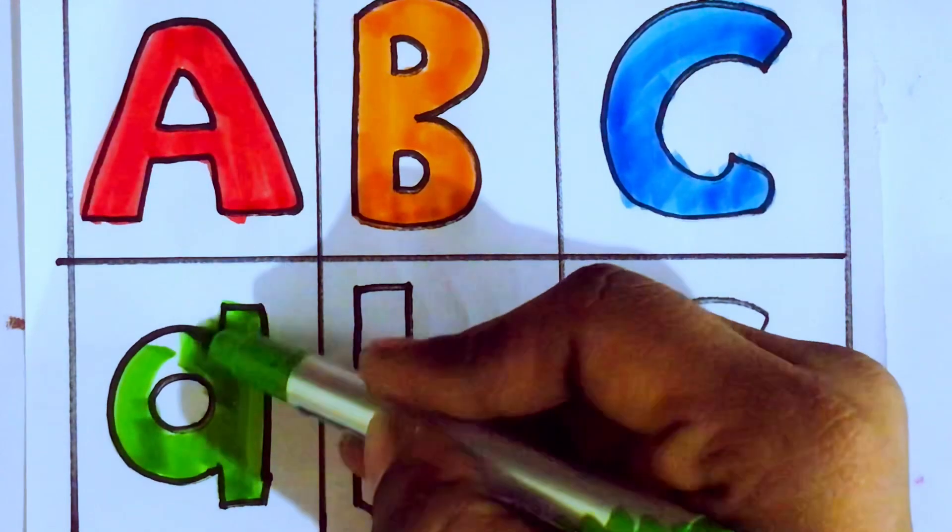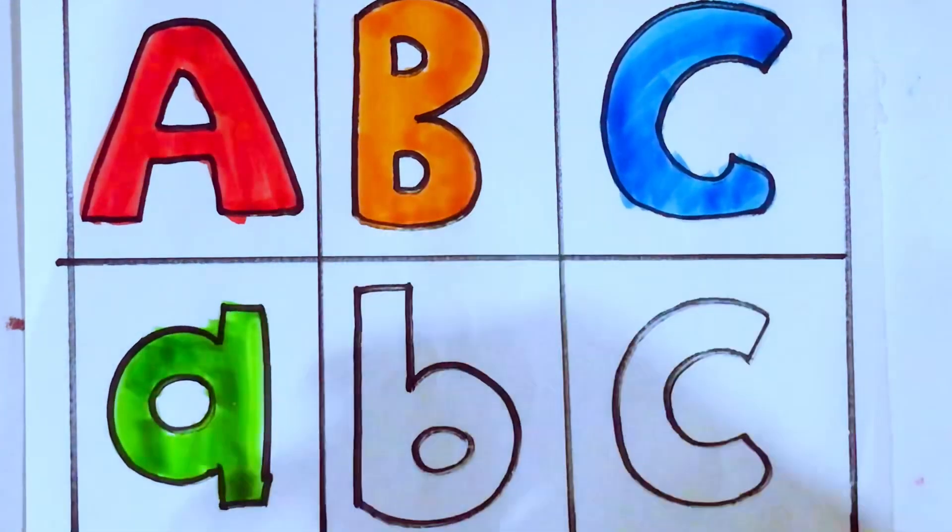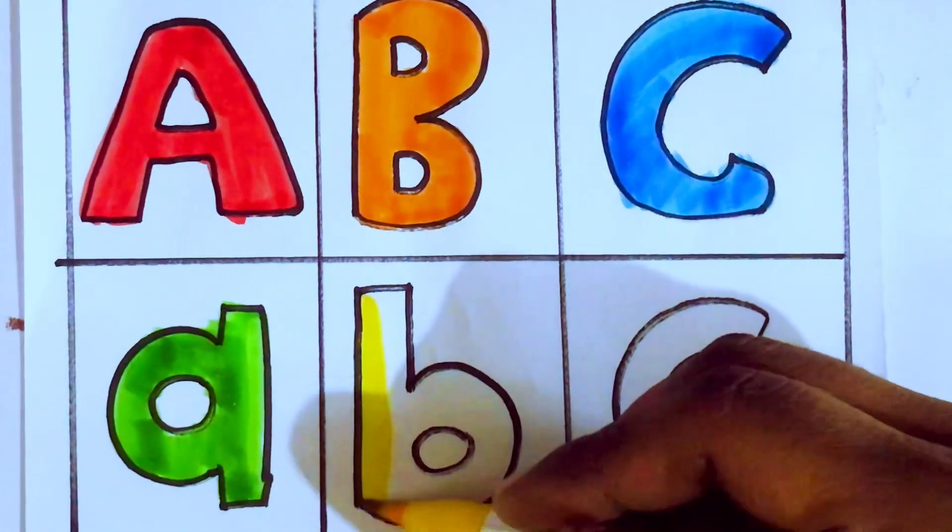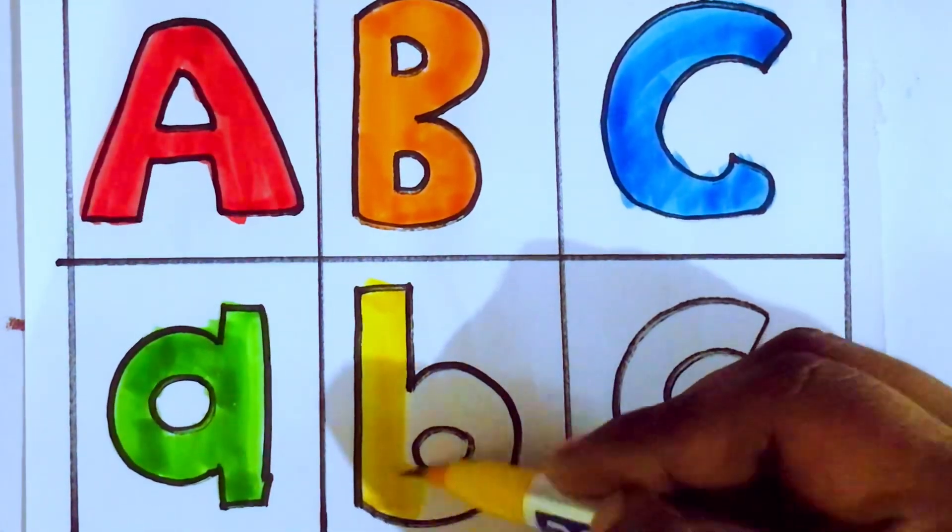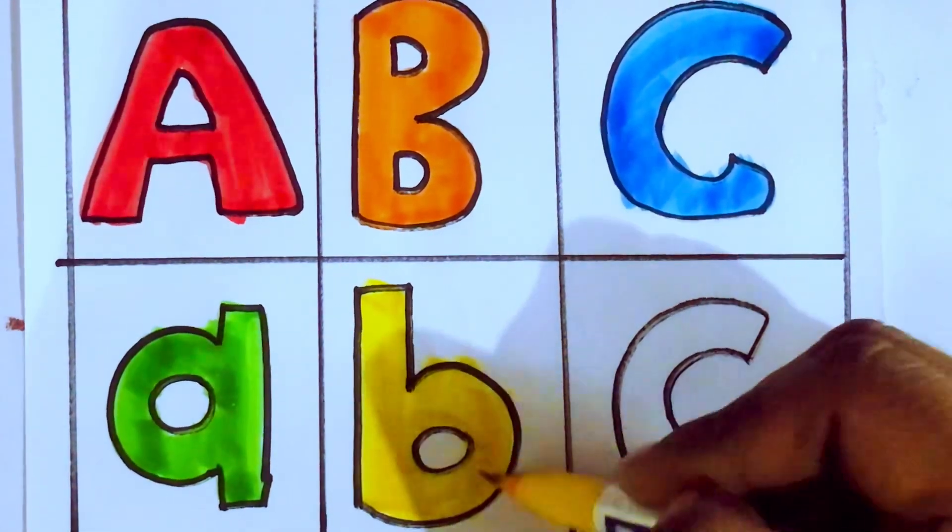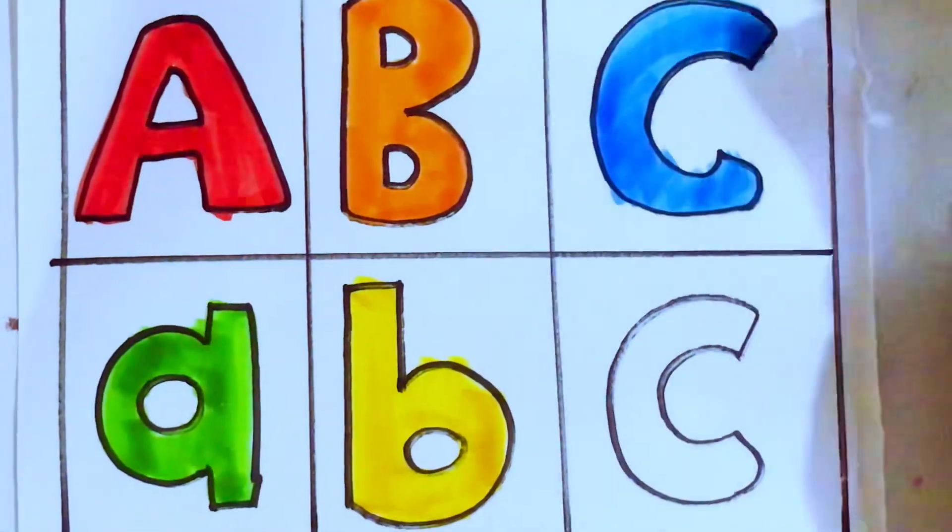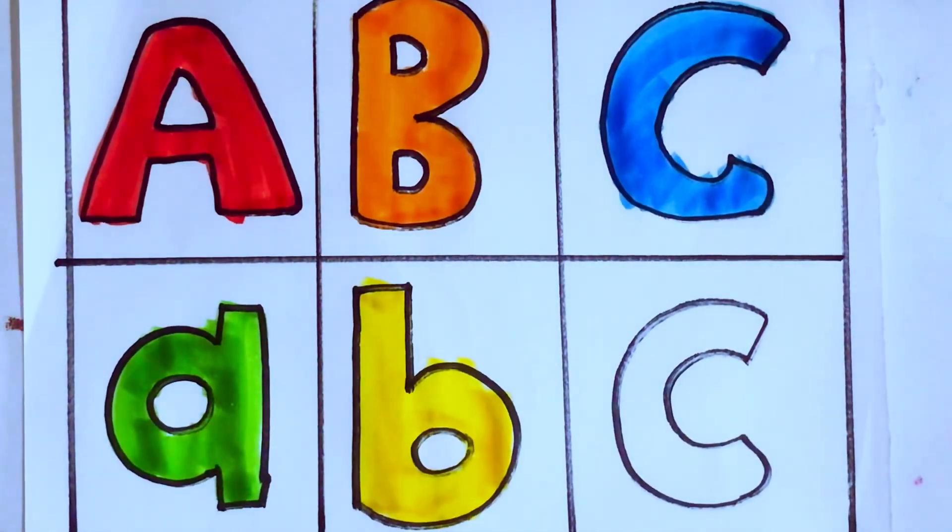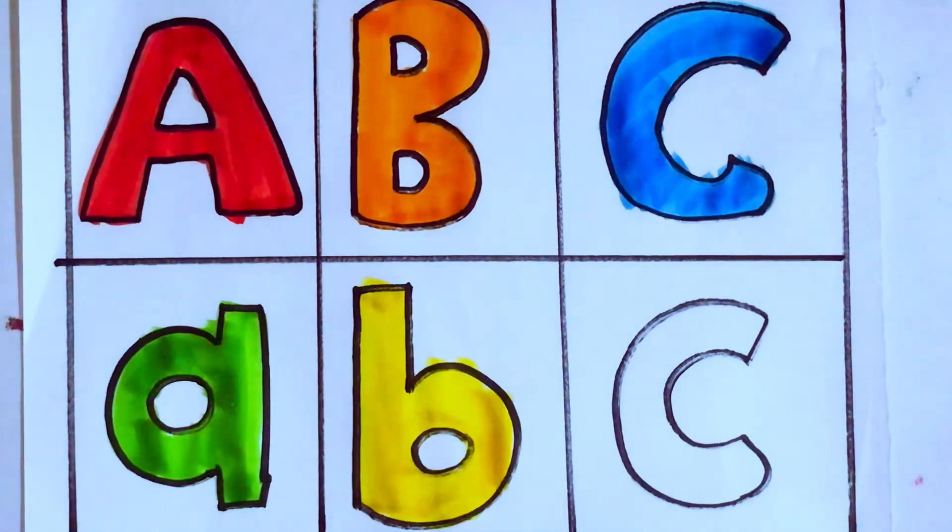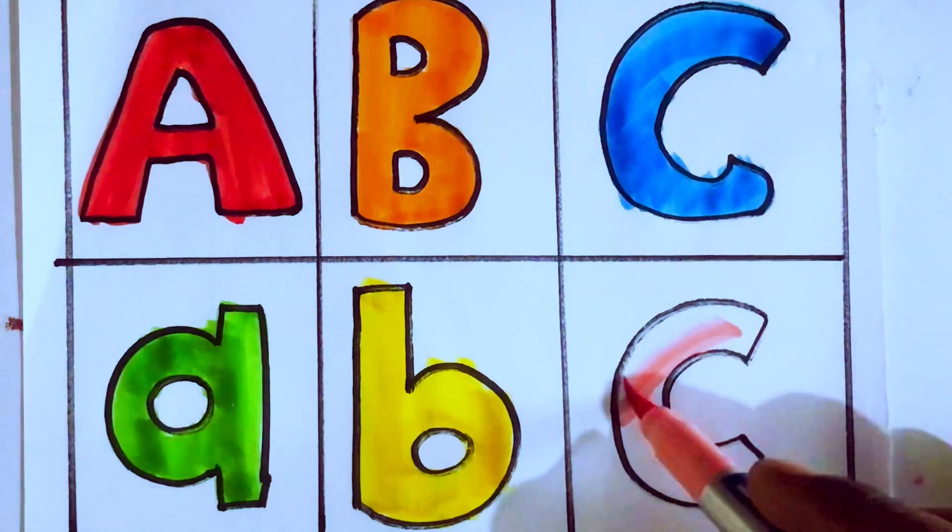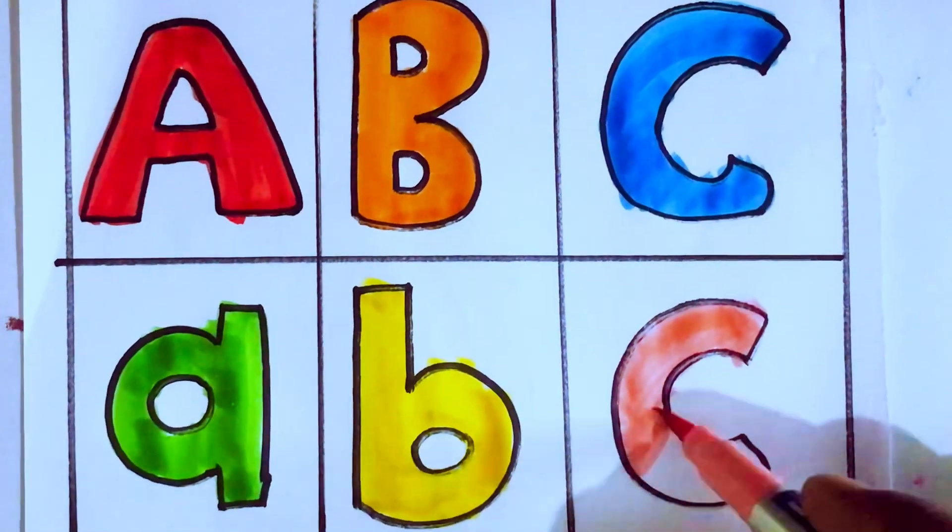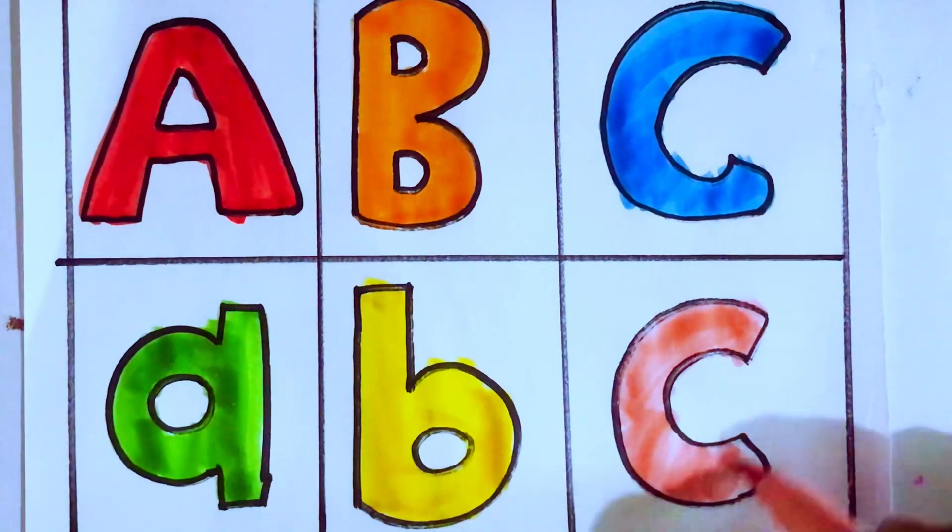A for ant. Small b. B for ball. Small c. C for cup.